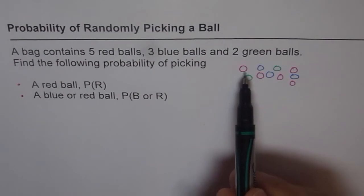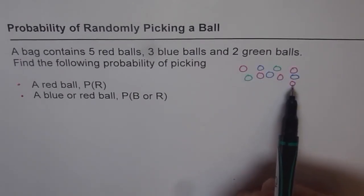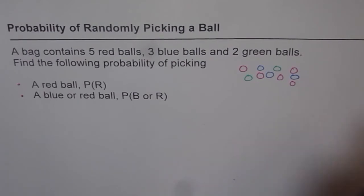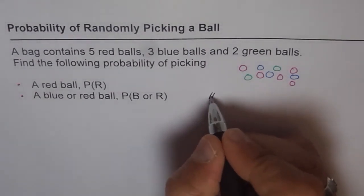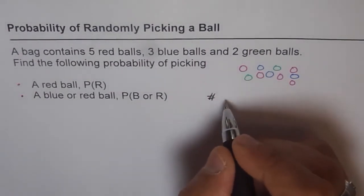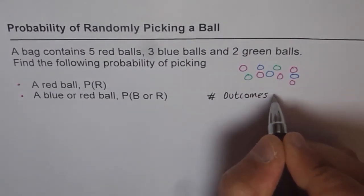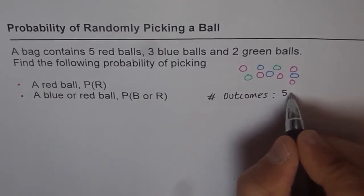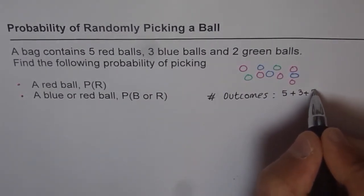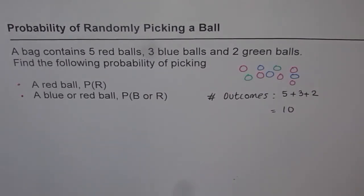So in all how many do we have? 1, 2, 3, 4, 5, 6, 7, 8, 9, 10. So the total number of outcomes is 10. The number of all possible outcomes — we just add them up: 5 plus 3 plus 2, and we get 10. So that is the total number of outcomes.